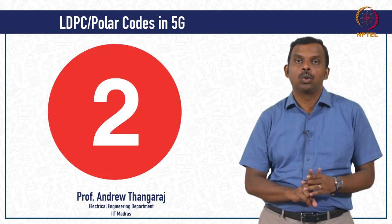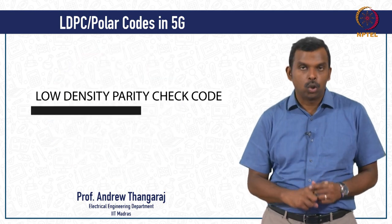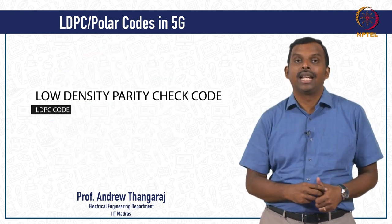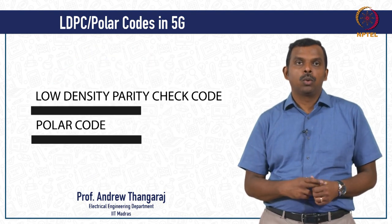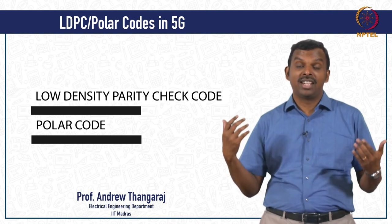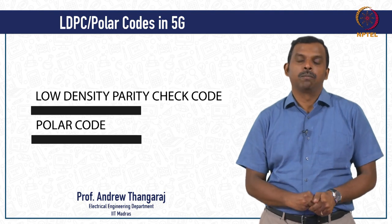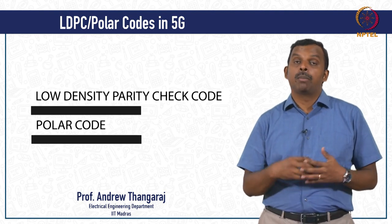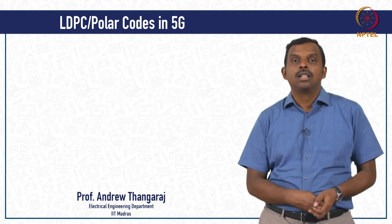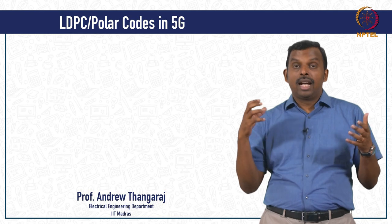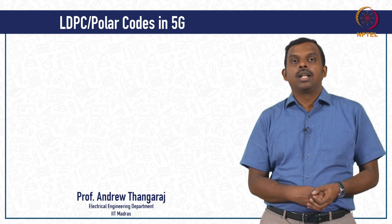There are two types of codes that are going to be used. One is what is called a low density parity check code, or in short an LDPC code. The other is a polar code. These two codes have very different and interesting histories and are very celebrated and famous codes today. Both of them have capacity-approaching properties which make them very strong contenders for providing the ultimate performance that everybody needs in the 5G communication system.